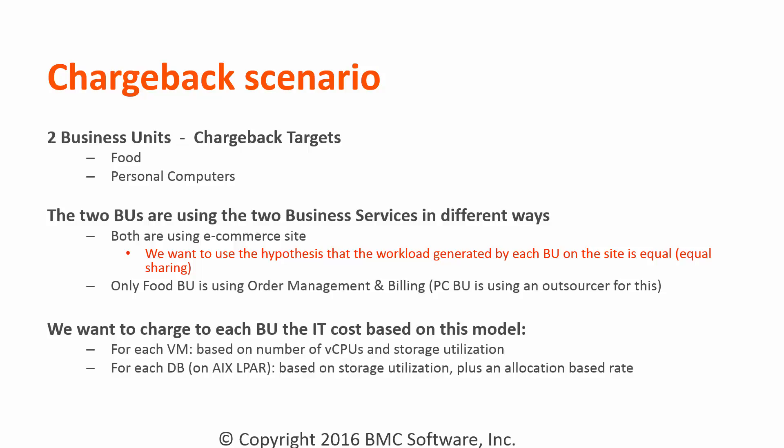One business unit is Food and the other is Personal Computers. Both units are using the e-commerce site, but only one is using the order management and billing. So we want to charge each business unit based on this model: the CPUs and storage utilization for each VM and the DB, based on storage utilization plus an allocation-based rate.